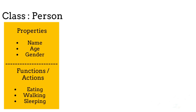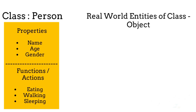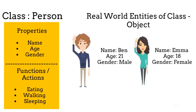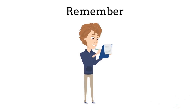Now we have a class Person, which gives us a guideline that every person should have properties and perform some functions. Real world entities of a class are called objects. Consider a real-life person named Ben — Ben is a 21-year-old boy. Consider another person named Emma — Emma is an 18-year-old girl. In this way we can create an infinite number of objects of the class Person.